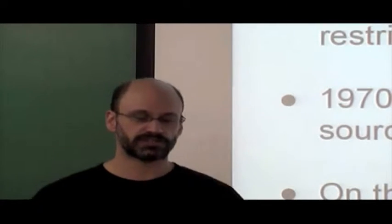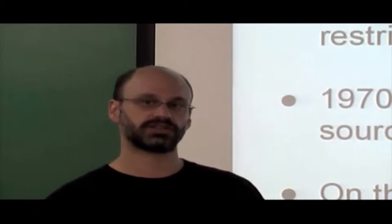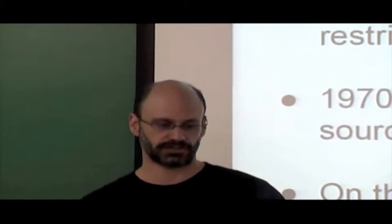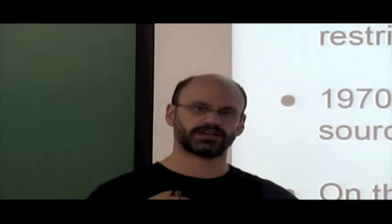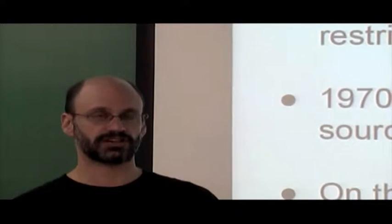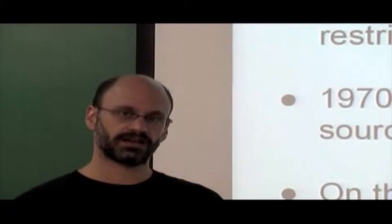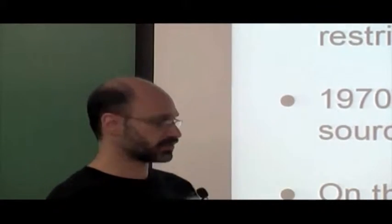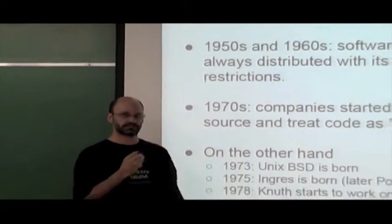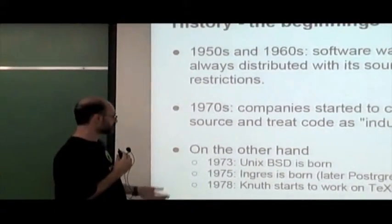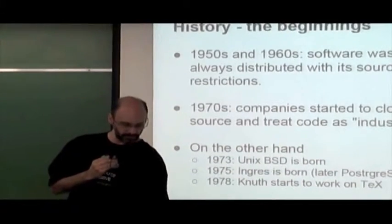In the 1970s, companies started to close their source and treat their code as an industrial secret. On the other hand, also in the 1970s, a lot of big open source projects started to form, becoming the basis of what we call today the free and Open Source software movement. For example, in 1973 Unix BSD was born, in 1975 the Ingres database, and in 1978 Knuth started work on the TeX package.